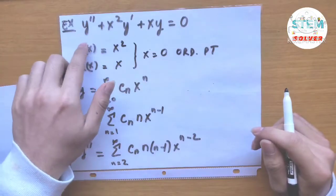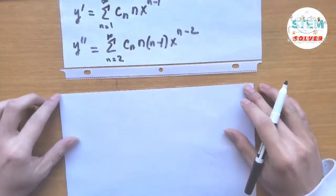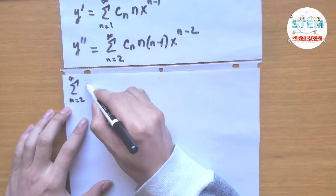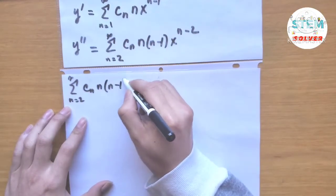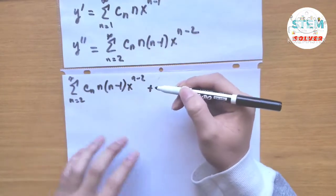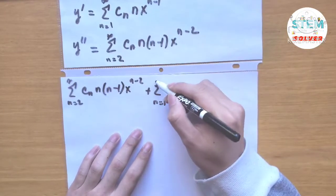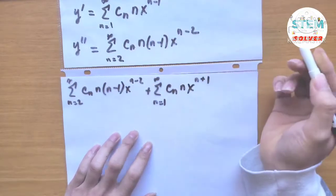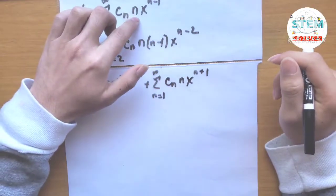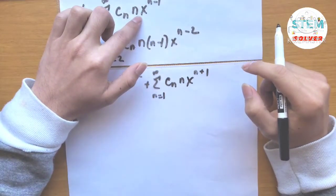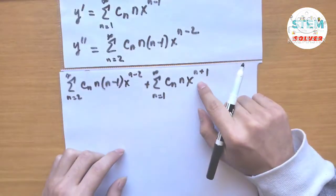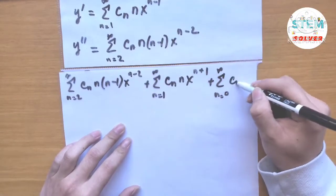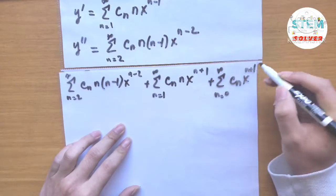Now I'm going to plug these into the differential equation. We have y double prime, which is the power series from 2 to infinity of c_n times n times n minus 1 times x to the n minus 2, plus x squared times y prime, which is the power series from 1 to infinity of c_n times n times x to the n plus 1 — since x squared times x to the n minus 1 gives x to the n plus 1 — plus x times y, which is the power series from 0 to infinity of c_n times x to the n plus 1, equals 0.